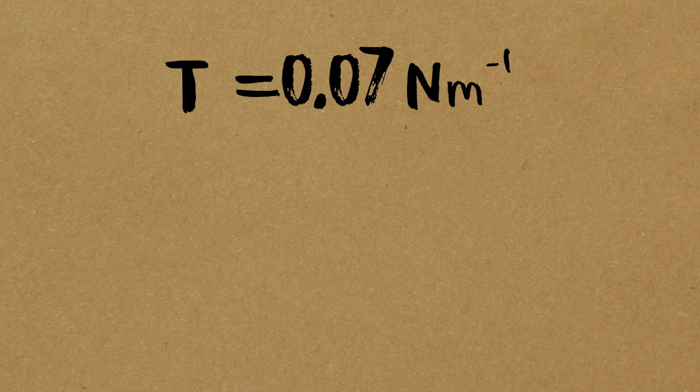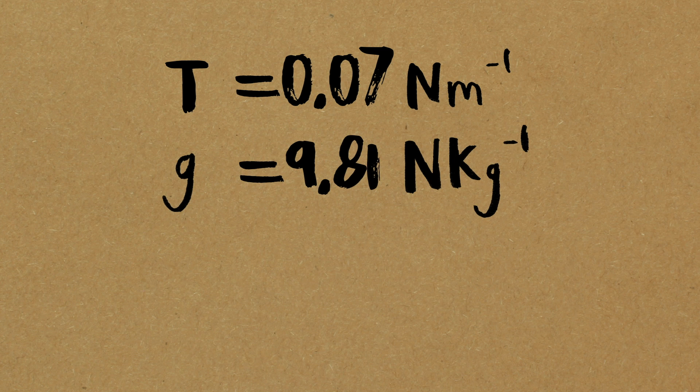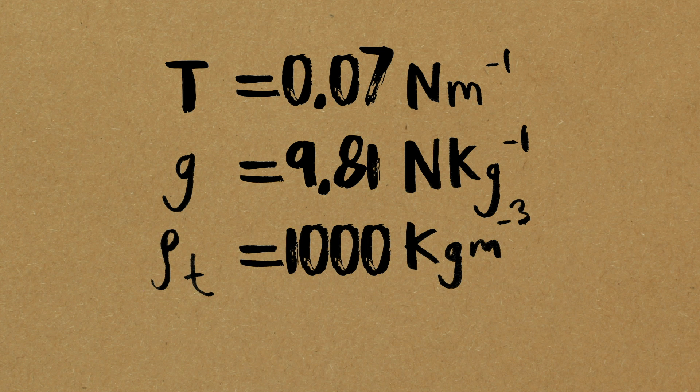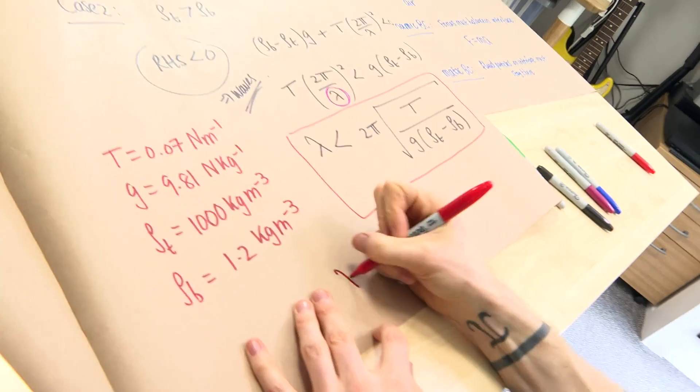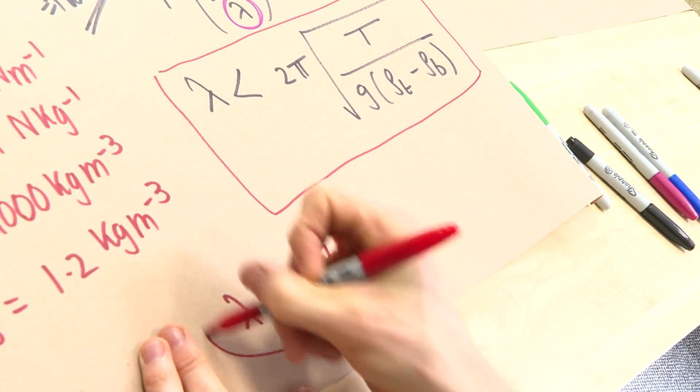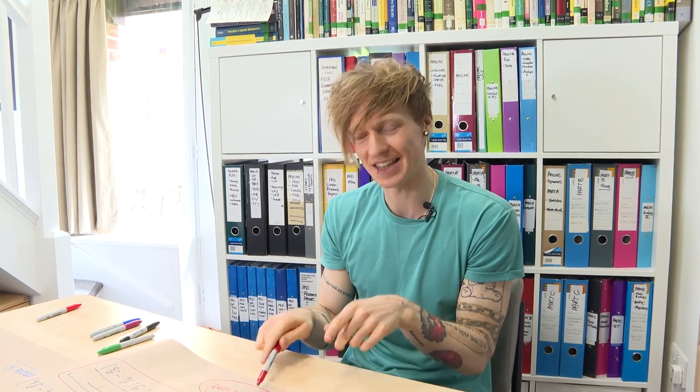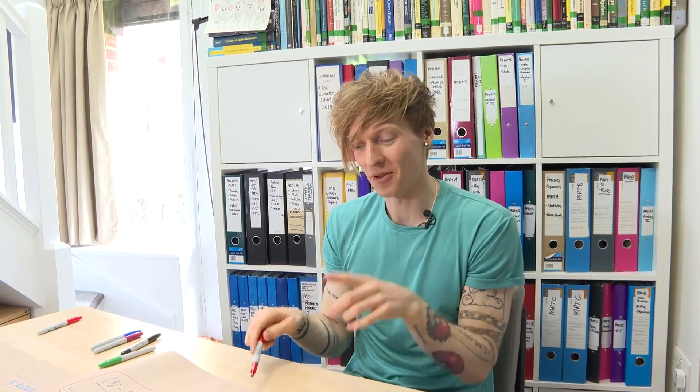So now we just want to plug in the numbers to figure out why did it work for some of our holes and not for the others. So τ, the surface tension between air and water is 0.07 newtons per meter. Gravity is 9.81 newtons per kilogram. Density of the top fluid, water, is about a thousand kilograms per meter cubed, for it being fresh water, and on the bottom is 1.2 kilograms per meter cubed. So there are numbers, we plug them in and we get that our wavelength has to be less than 1.7 centimeters. So when we have our glass upside down with the water and then air below it, surface tension is able to hold it in place and allow the interface to exist with waves, provided the wavelength is less than 1.7 centimeters. And the way we control that is by making our holes less than 1.7 centimeters.